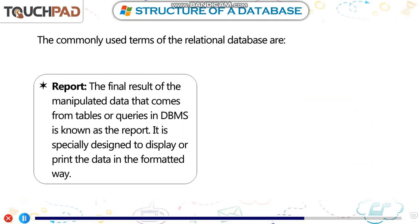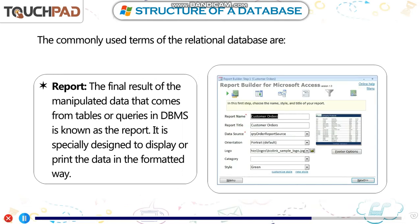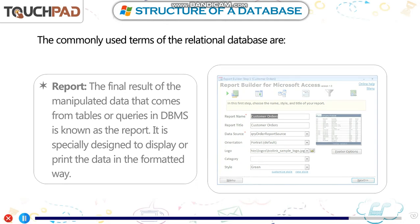Report: The final result of the manipulated data that comes from tables or queries in a DBMS is known as the report. It is specially designed to display or print the data in a formatted way.